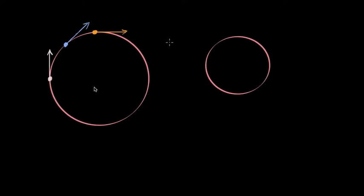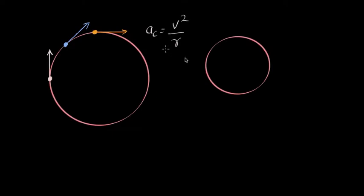To start, velocity direction will be along the tension and centripetal acceleration will be v² by r, and this is always towards the center.